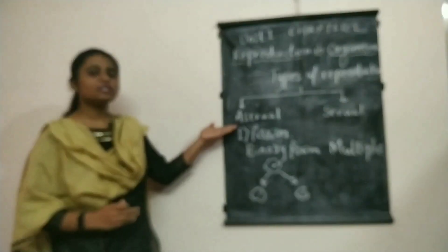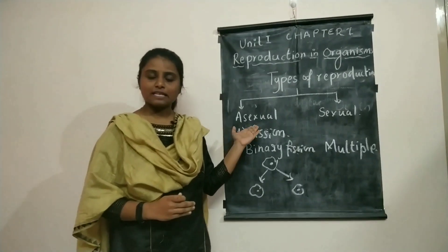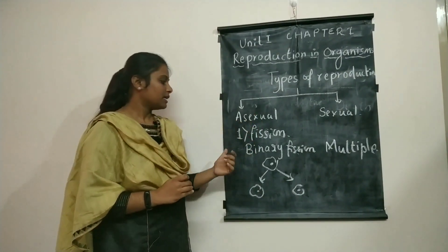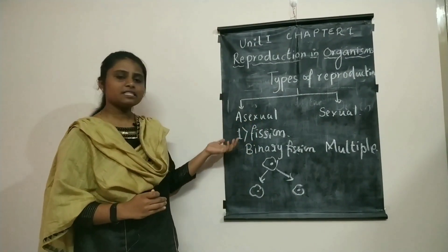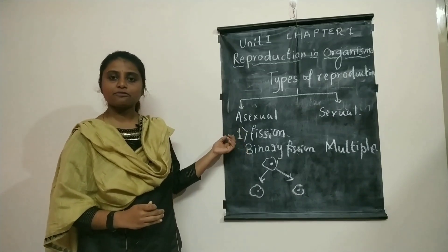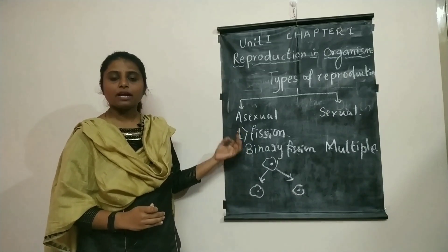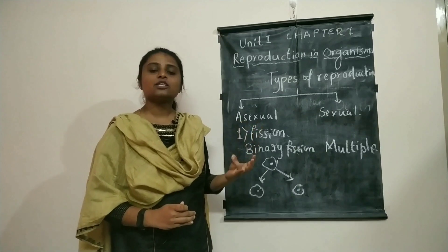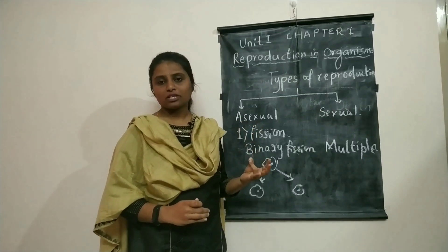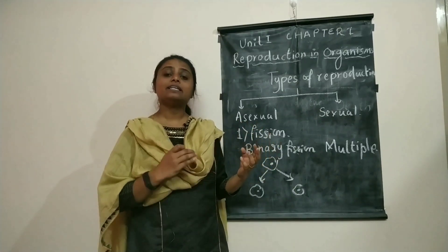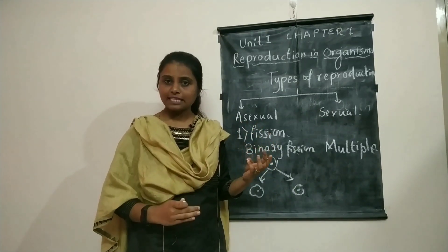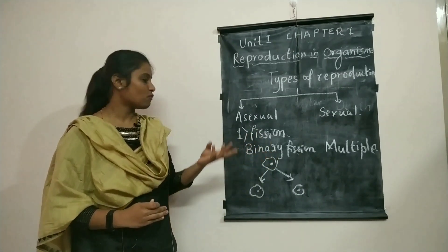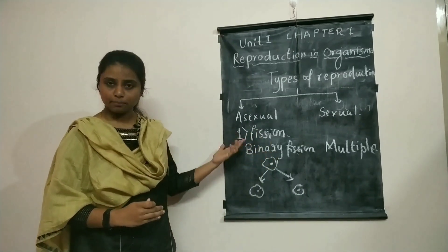Asexual reproduction is a basic kind of reproduction. It has many types: fission, fragmentation, sporulation, asexual spore formation, and in higher plants we will also see that vegetative propagation is a type of asexual reproduction.